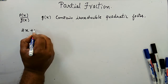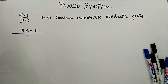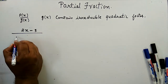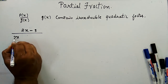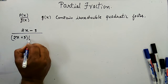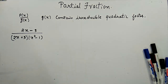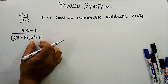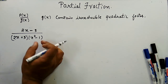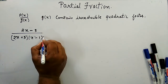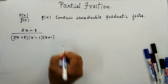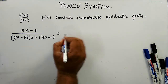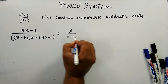The third example is (2x + 3) / ((2x + 3)(x² - 1)). Now x² - 1 can be factored into two linear factors: x² - 1 = (x - 1)(x + 1). So the denominator becomes (2x + 3)(x - 1)(x + 1).